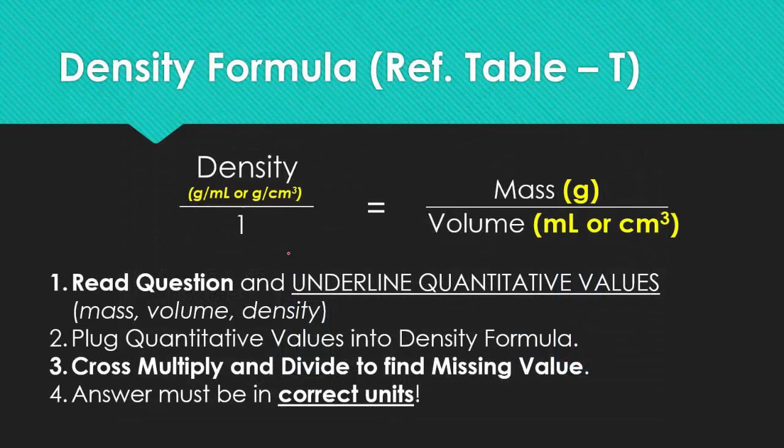Here's the density formula and hopefully you're already familiar with it. It's on table T if you're not, but it's density which equals the mass divided by the volume of an object. You read the question, underline any quantitative values, remember quantity meaning numbers, plug quantitative values into the density formula, and then cross multiply and divide to find missing values. Your answer should be in the correct units. On your reference table, it just says density equals mass over volume.